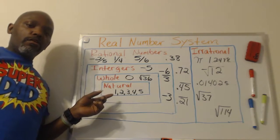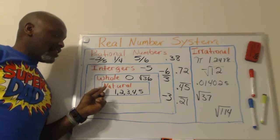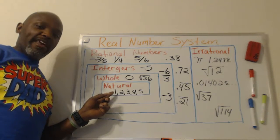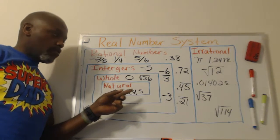All right, so the first part of the real number system is the natural numbers. These are your counting numbers, like 1, 2, 3, 4, 5.